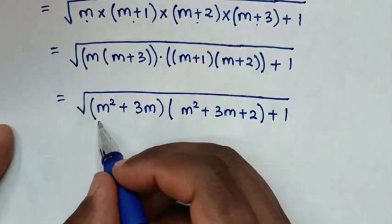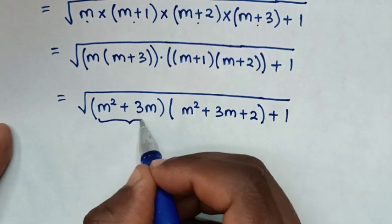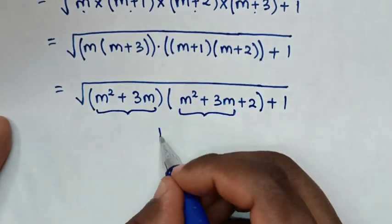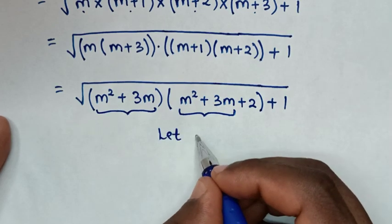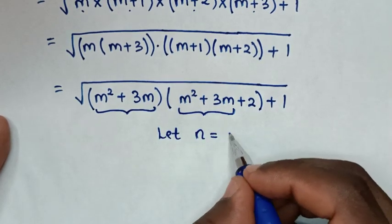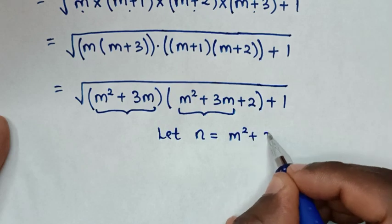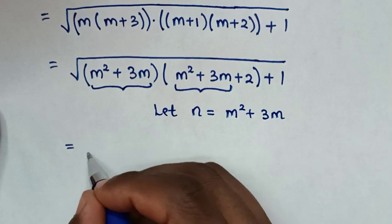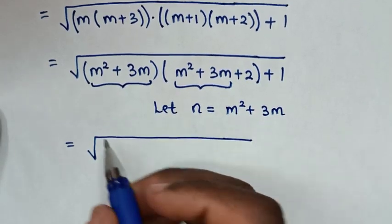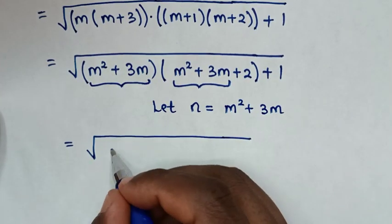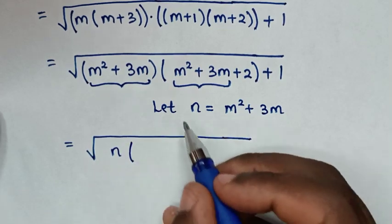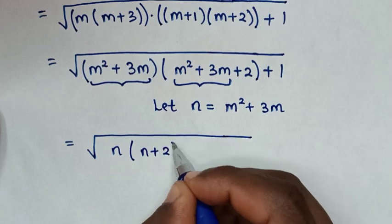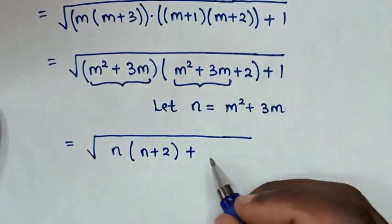In the next step, m²+3m is common, so we let n equal to m²+3m. It will be equal to the square root of n times (n+2), then plus 1.